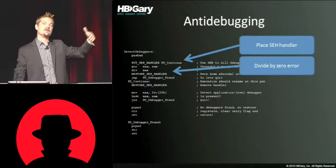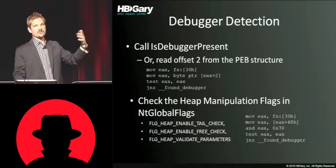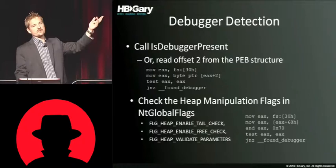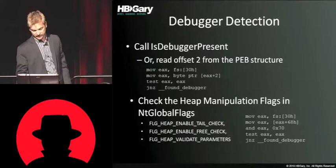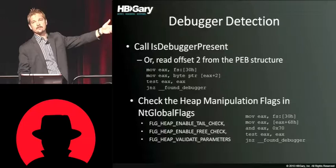Some different things an anti-debugging capability might have: IsDebuggerPresent is just a flag stored off the FS register, but people will actually make the API call, which then just reads the flag. You can just read the flag directly too — I've seen code where it just pulls the FS register directly without using the API call. Heap manipulation flags will be different if there's debugging present, and that's another technique that's used. You can see the assembly language that would be used to make that test.